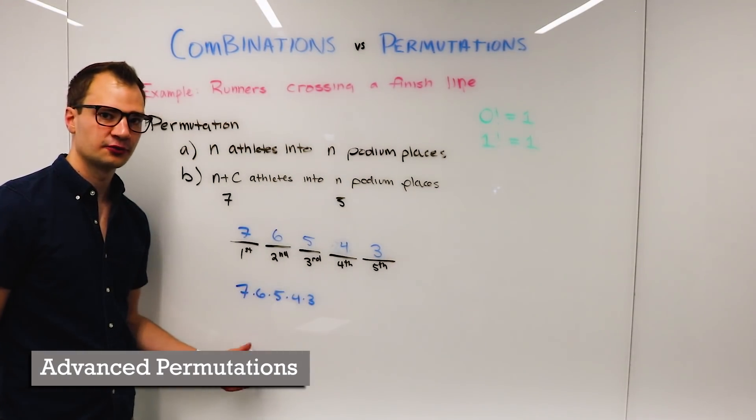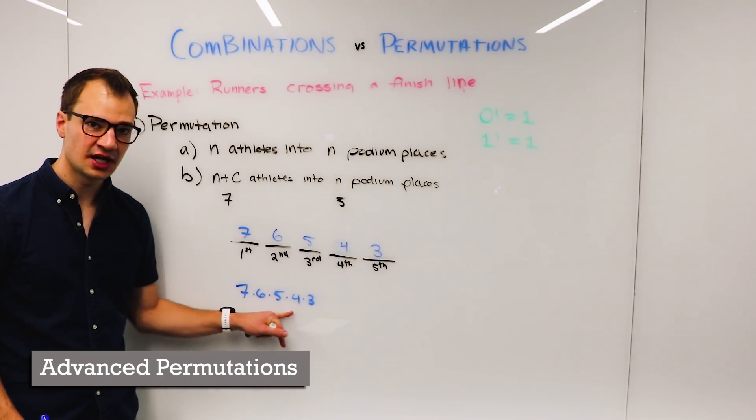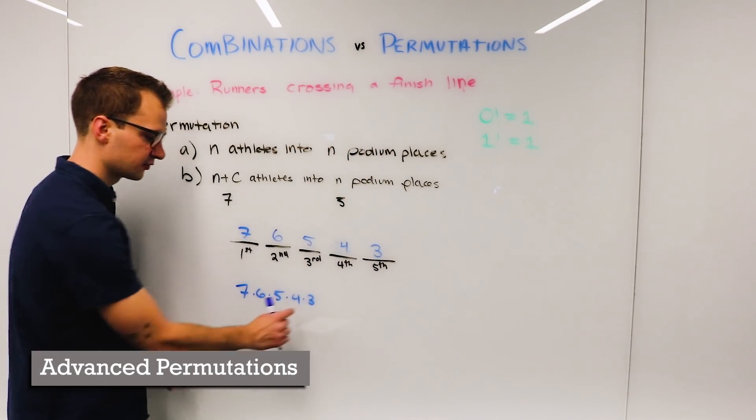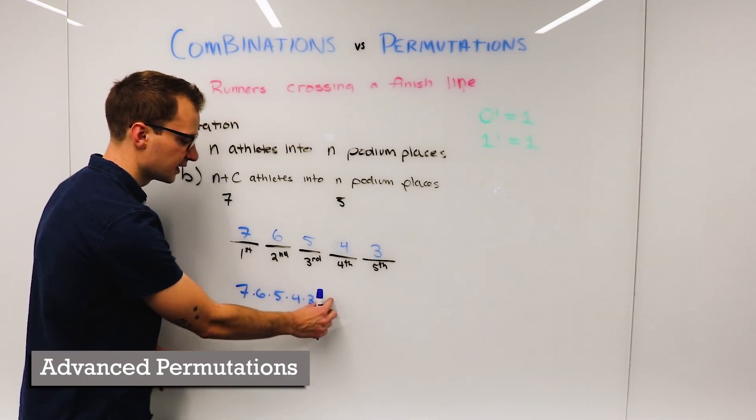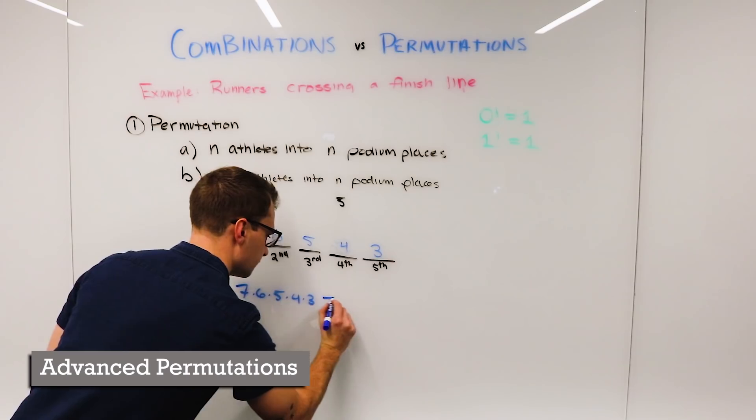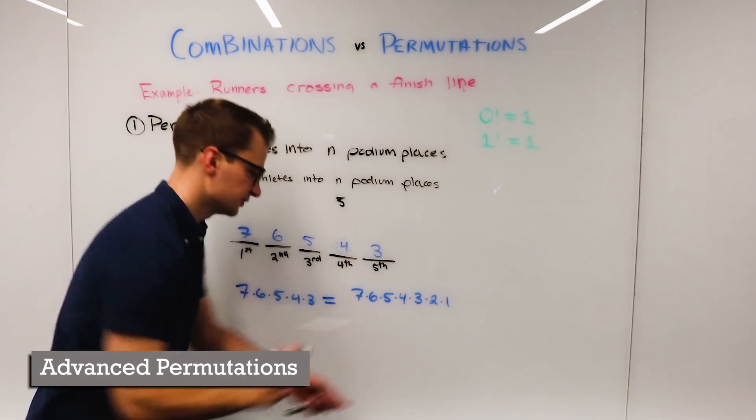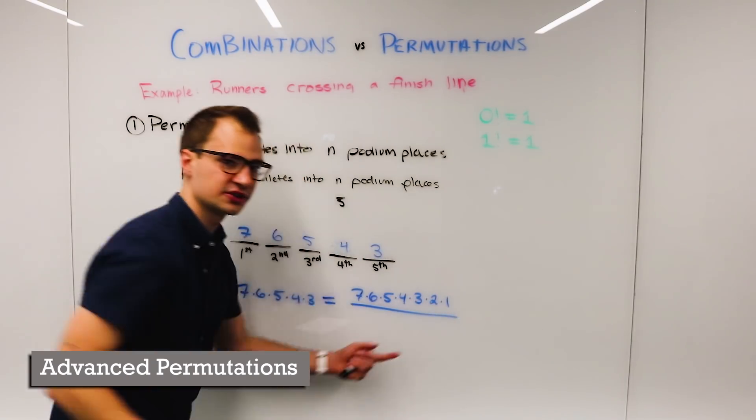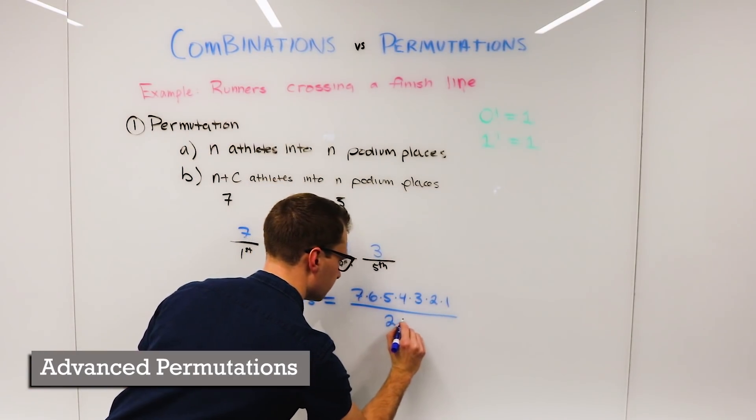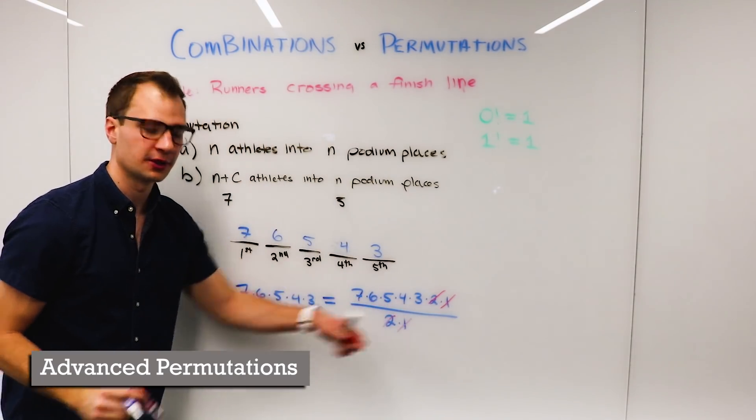So we're going to find a way to write this using our factorial notation. Now this looks a lot like seven factorial. Seven factorial includes a two and a one on the end. So we need a way to cancel out those twos and ones. And so to cancel out these twos and ones, let's just divide by two times one. And we're left with what we want.